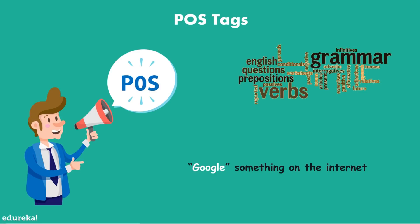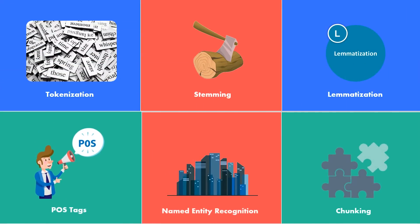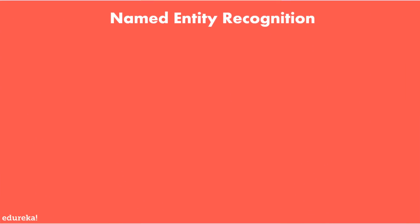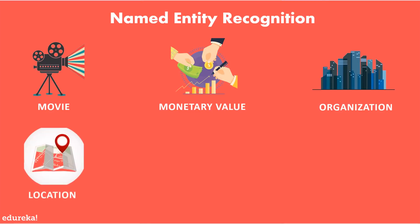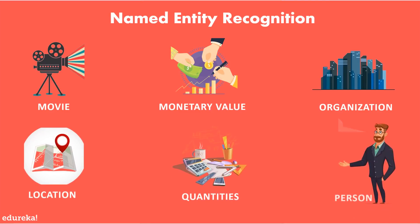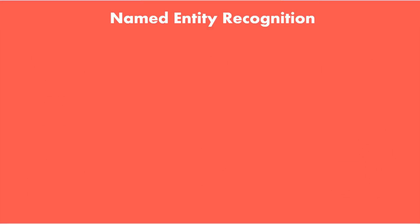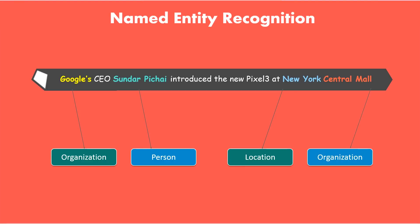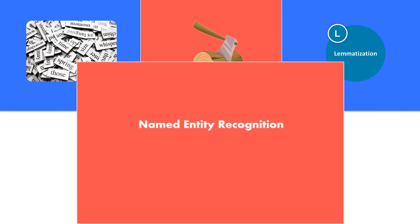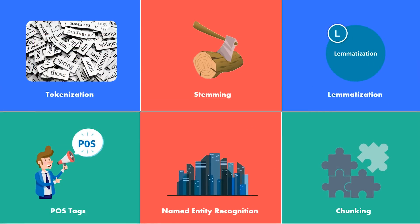To overcome the challenges in processing natural language, we have named entity recognition, also known as NER. It is the process of detecting named entities such as person names, company names, quantities, or locations. It has three steps: noun phrase identification, phrase classification, and entity disambiguation. For example, in the sentence 'Google CEO Sundar Pichai introduced the new Pixel 3 at New York Central Mall,' Google is identified as an organization, Sundar Pichai as a person, New York as a location, and Central Mall as an organization.